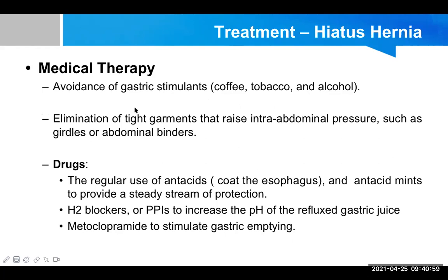Treatment can be discussed under two headings: medical therapy and surgical therapy. For medical therapy, avoidance of gastric stimulants like coffee, tobacco, alcohol, and smoking is recommended. Elimination of tight garments that raise intra-abdominal pressure, such as girdles or abdominal binders, is also advised. The two main goals are: decreasing acid production by lifestyle modification, and decreasing intra-abdominal pressure through weight loss.